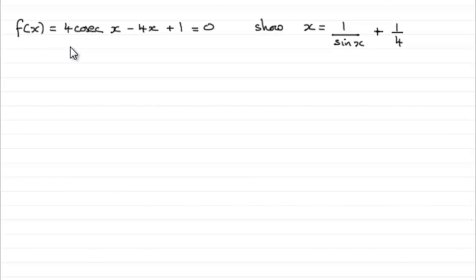Ok, for this part then, we're told that when f of x equals 0, we've got to show that x equals 1 over sin x plus a quarter.